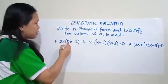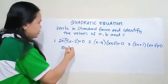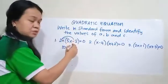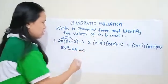So 2x times 5x is 10x squared. And then 2x times negative 2, the answer is negative 4x equals 0.